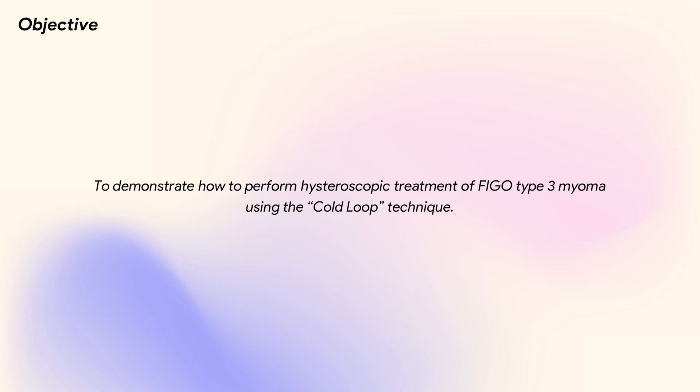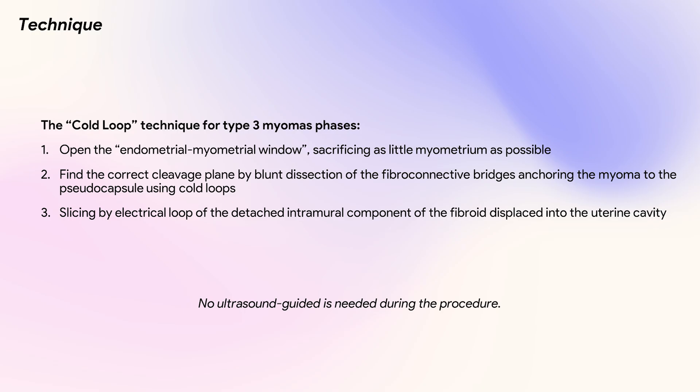In this video, we demonstrate a step-by-step hysteroscopic treatment of FIGO type 3 myoma using the cold-loop technique. The cold-loop hysteroscopic myomectomy is articulated in three phases: one, open the endometrial-myometrial window, sacrificing as little myometrium as possible; two, find the correct cleavage plane by blunt dissection of the fiber connective bridges anchoring the myoma to the pseudo-capsule using cold loops; three, slicing by electrical loop of the detached intramural component of the fibroid displaced into the uterine cavity. No ultrasound guidance is needed during the procedure.